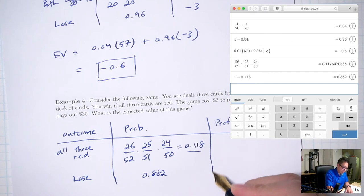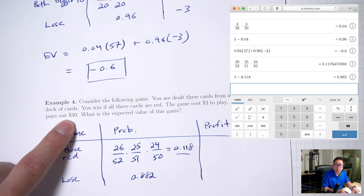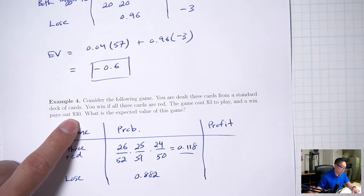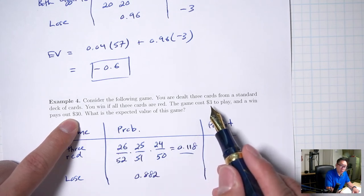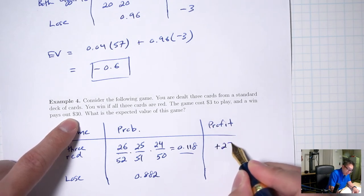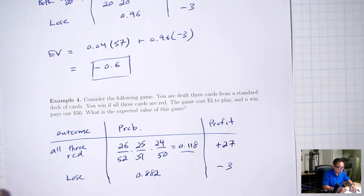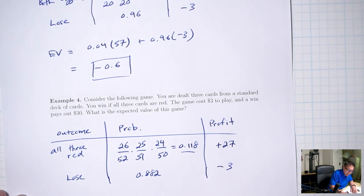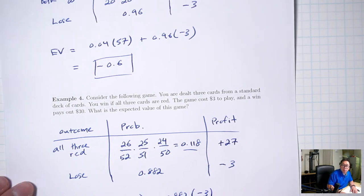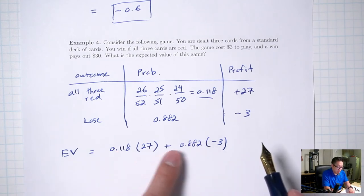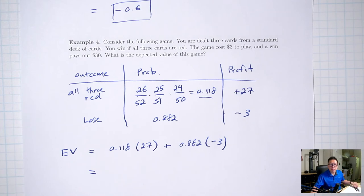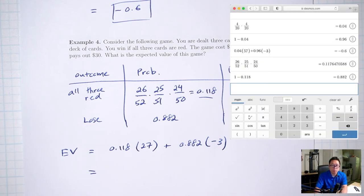Profit: if you get three red cards, you win $30 minus the $3 cost to play, so plus $27. If you lose, you're down $3. Expected value: 0.118 times 27 plus 0.882 times negative 3 equals 0.54.